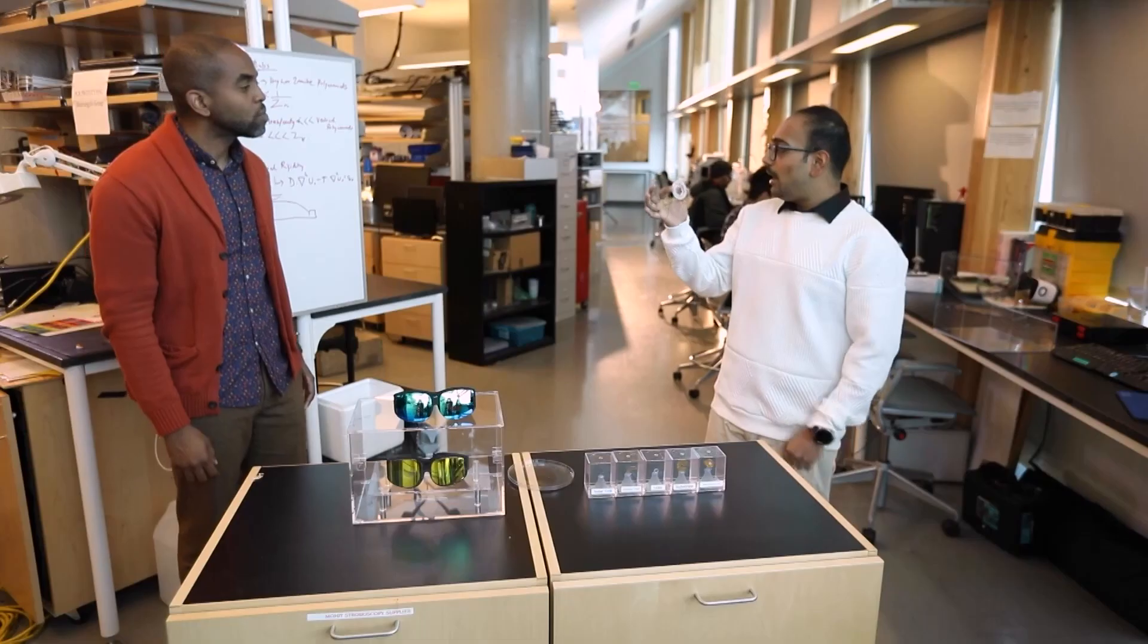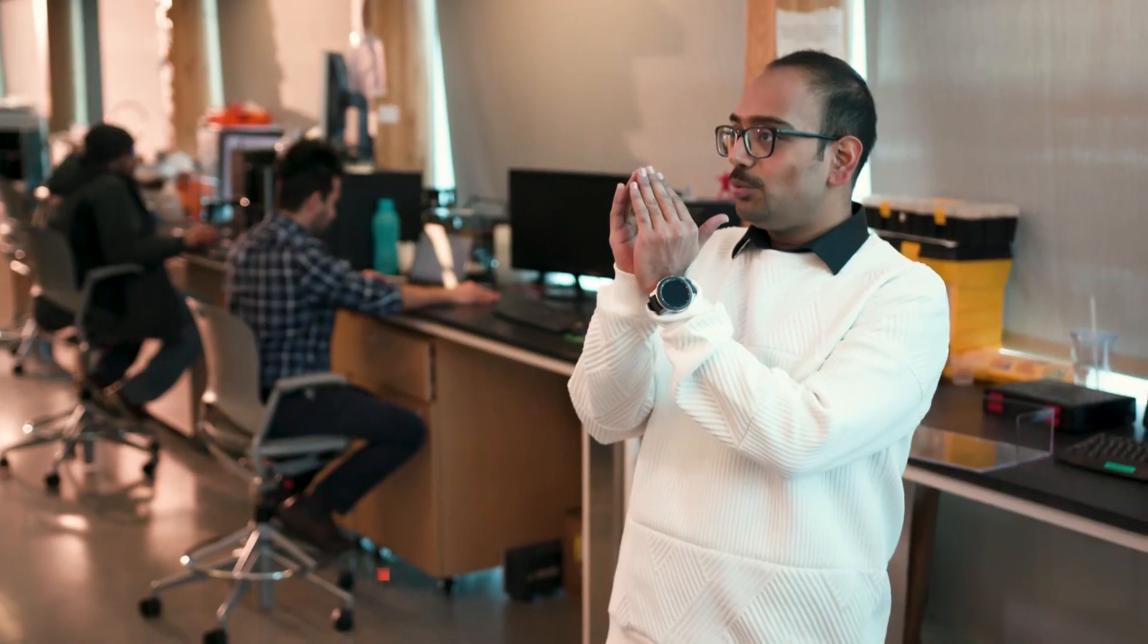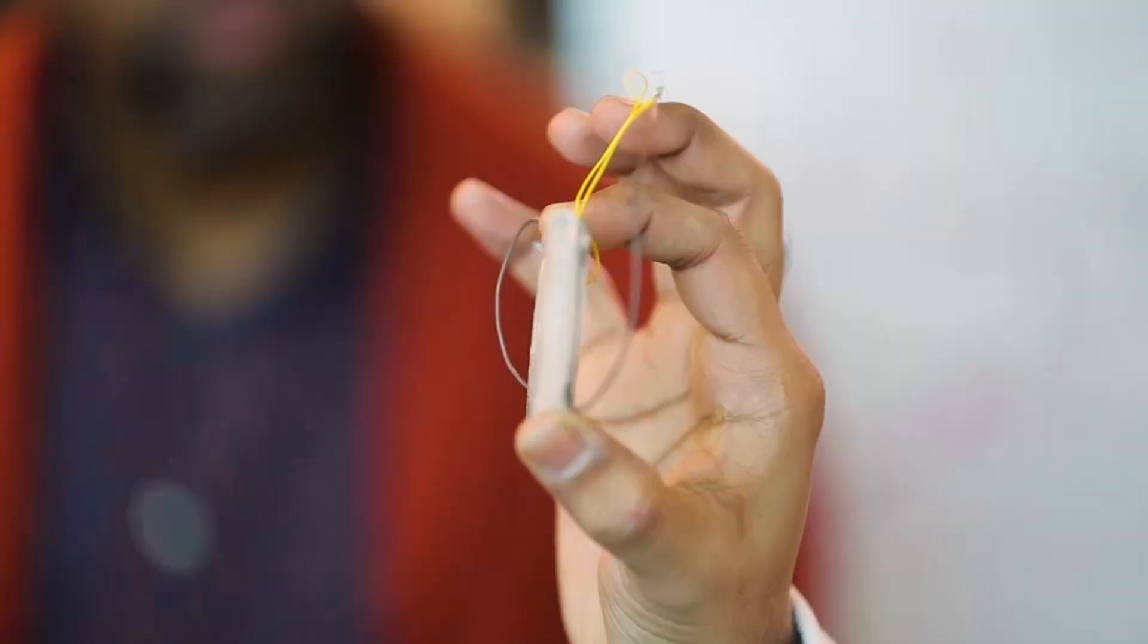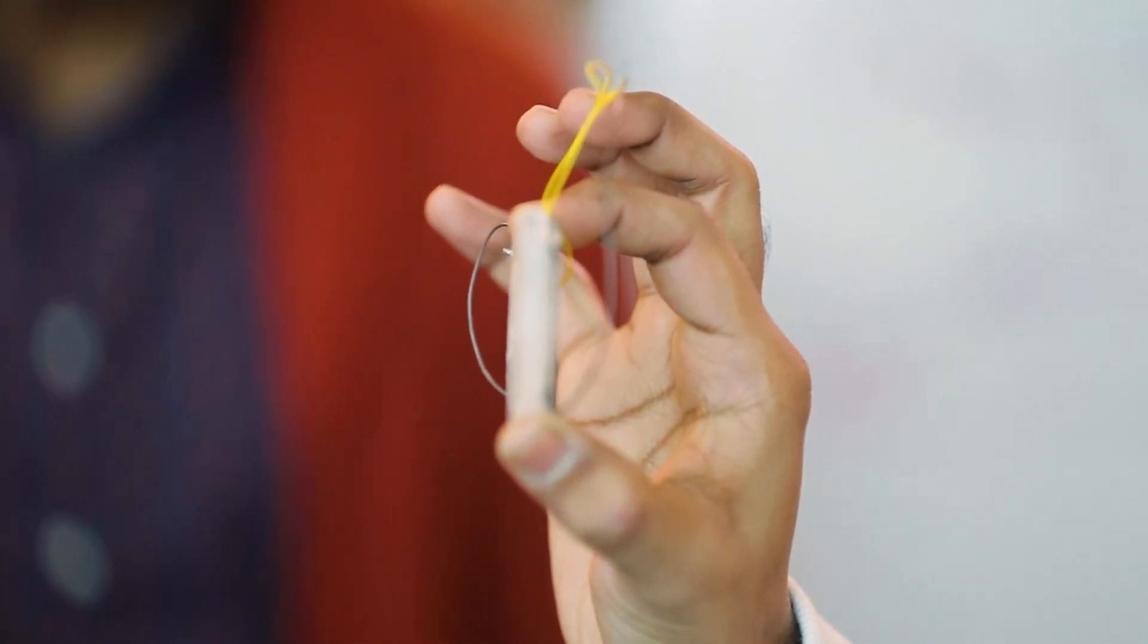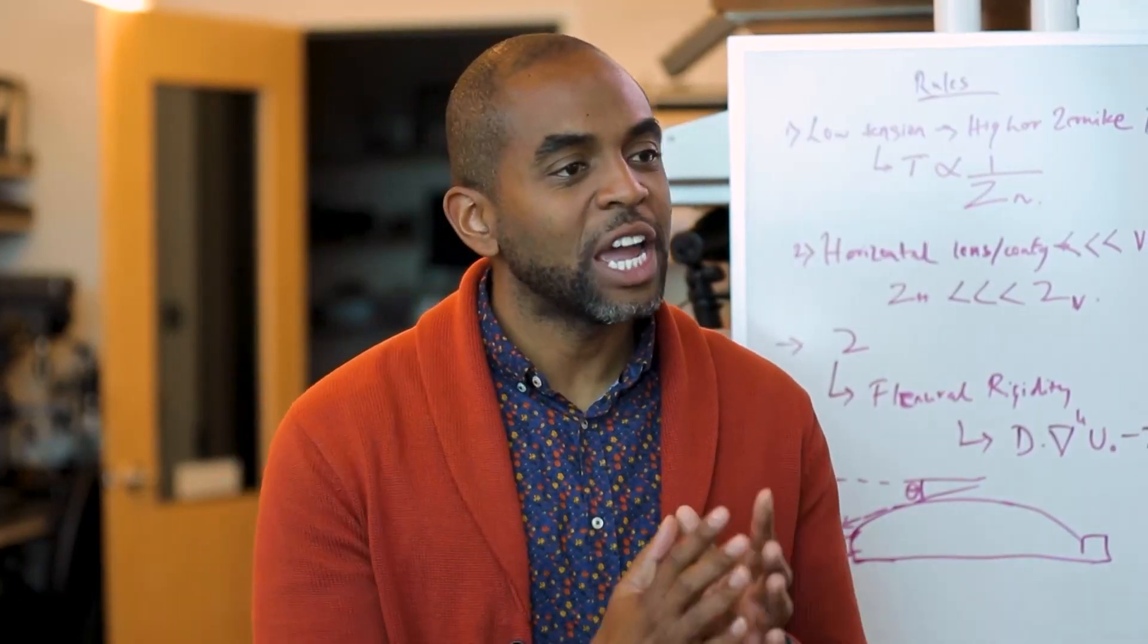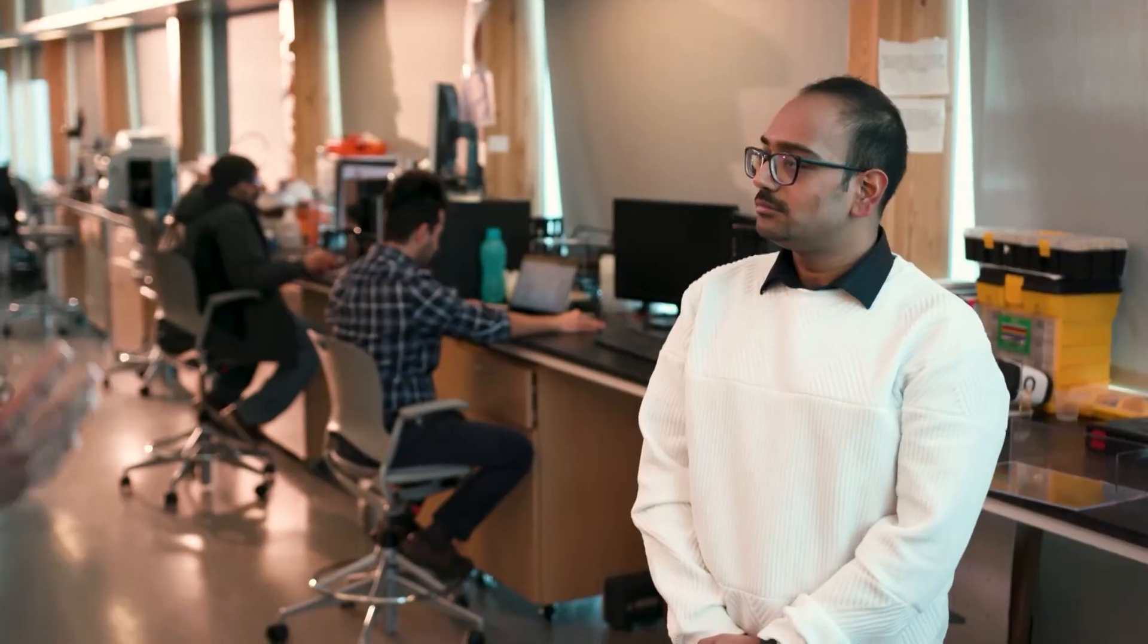Now, these tunable lenses are sort of a pouch which is filled with glycerin. And then there's a piston attached which pushes the glycerin in and pulls the glycerin out, which changes the shape of the lens and allows us to control the power of the lens. And the reason that we want to change the shape of the lens is because we're adjusting for different focus. That's correct.